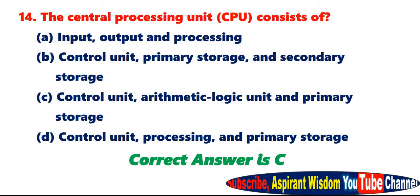Question 14: The central processing unit (CPU) consists of A. Input, output and processing. B. Control unit, primary storage and secondary storage. C. Control unit, arithmetic logic unit and primary storage. D. Control unit, processing and primary storage. Correct answer is C.